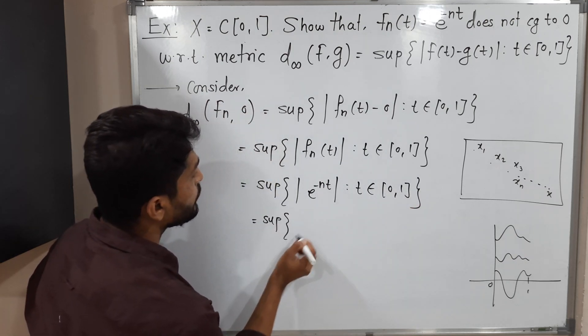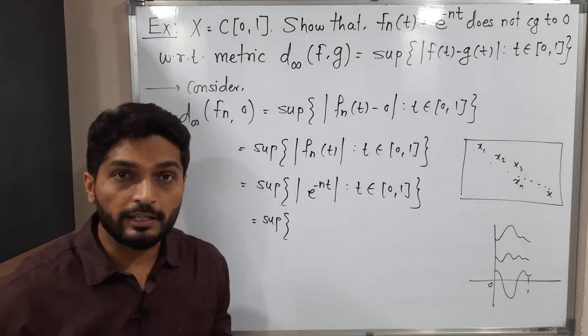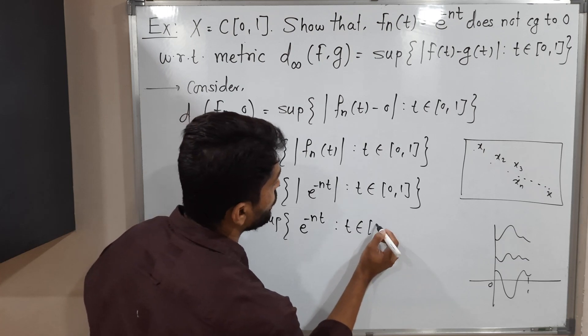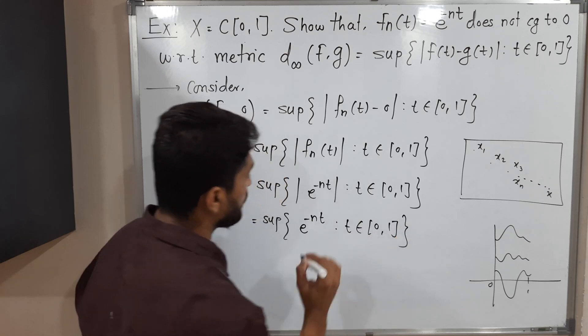We know that the exponential function is never negative. So you will have e^(-nt), t belongs to closed interval [0, 1].